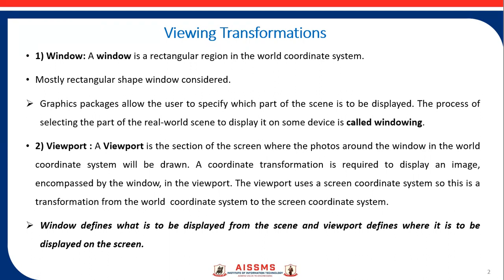Next is Viewport. Viewport is the section of screen where the portion around the window in the world coordinate system will be drawn. A coordinate transformation is required to display an image encompassed by the window in the viewport. The viewport uses a screen coordinate system, so this is a transformation from the world coordinate system to the screen coordinate system. The window defines what is to be displayed, and the viewport defines where it is to be displayed on the screen.